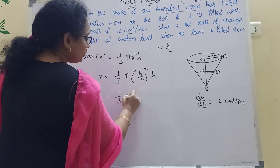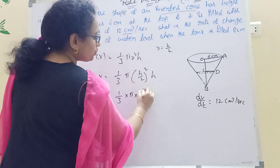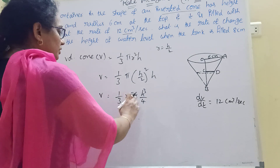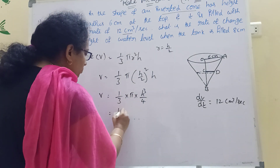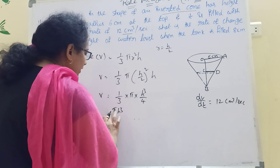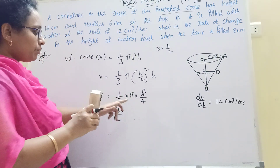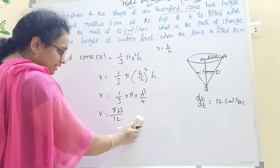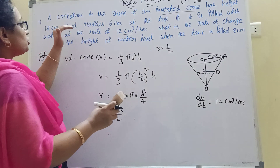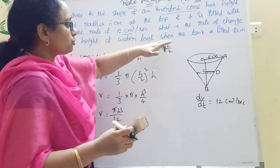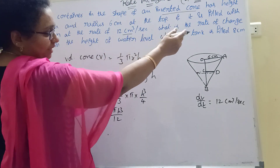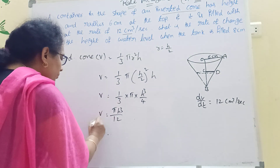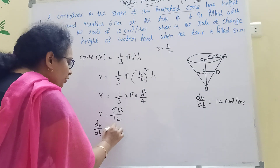Simplifying: V equals one-third into pi into h squared by 4 times h, giving V equals pi h cubed by 12. Now we differentiate with respect to t to find the rate of change. dV by dt equals pi by 12, which is constant.